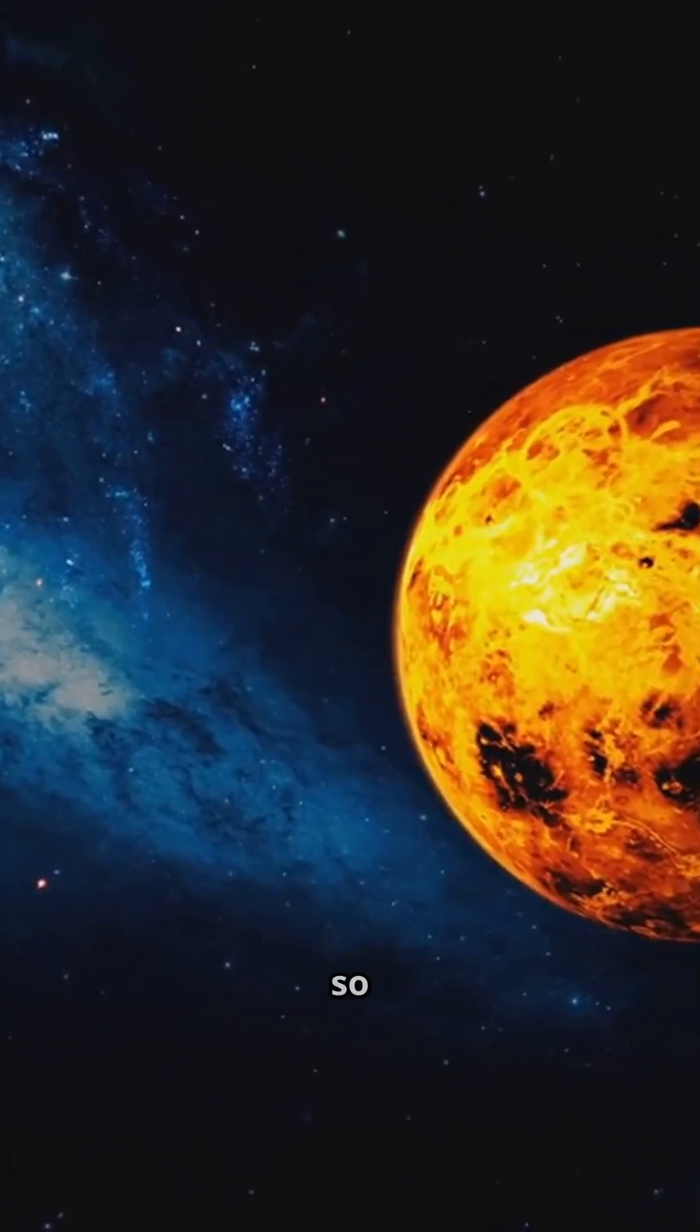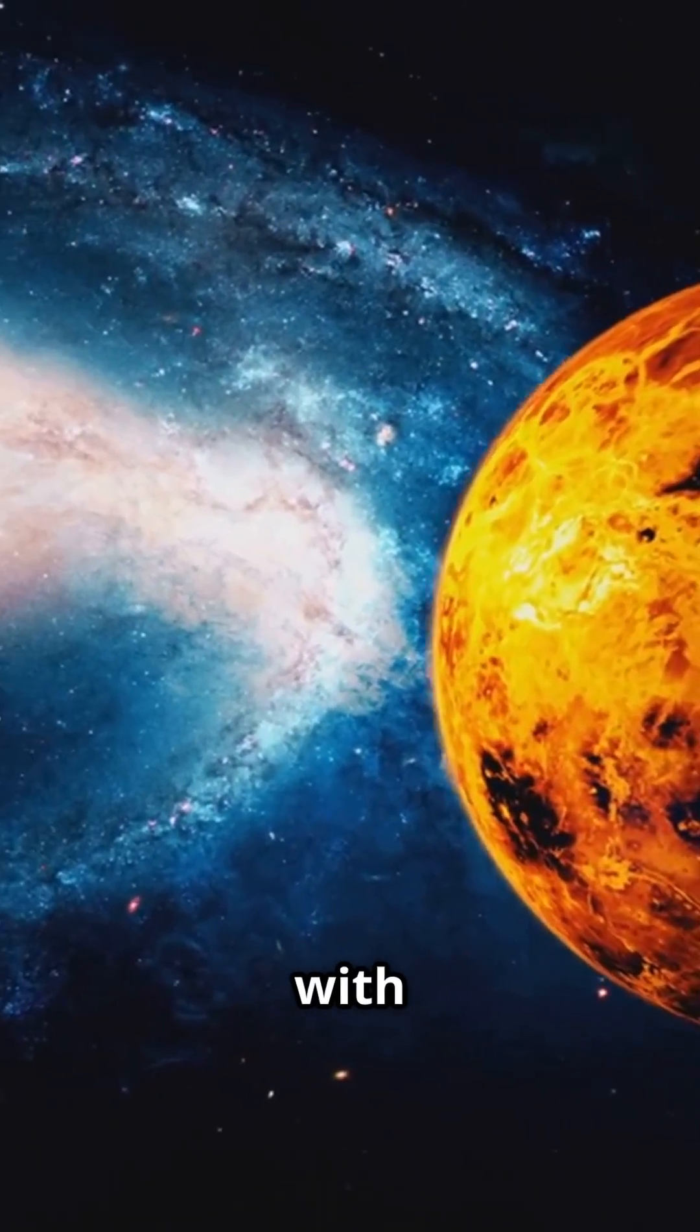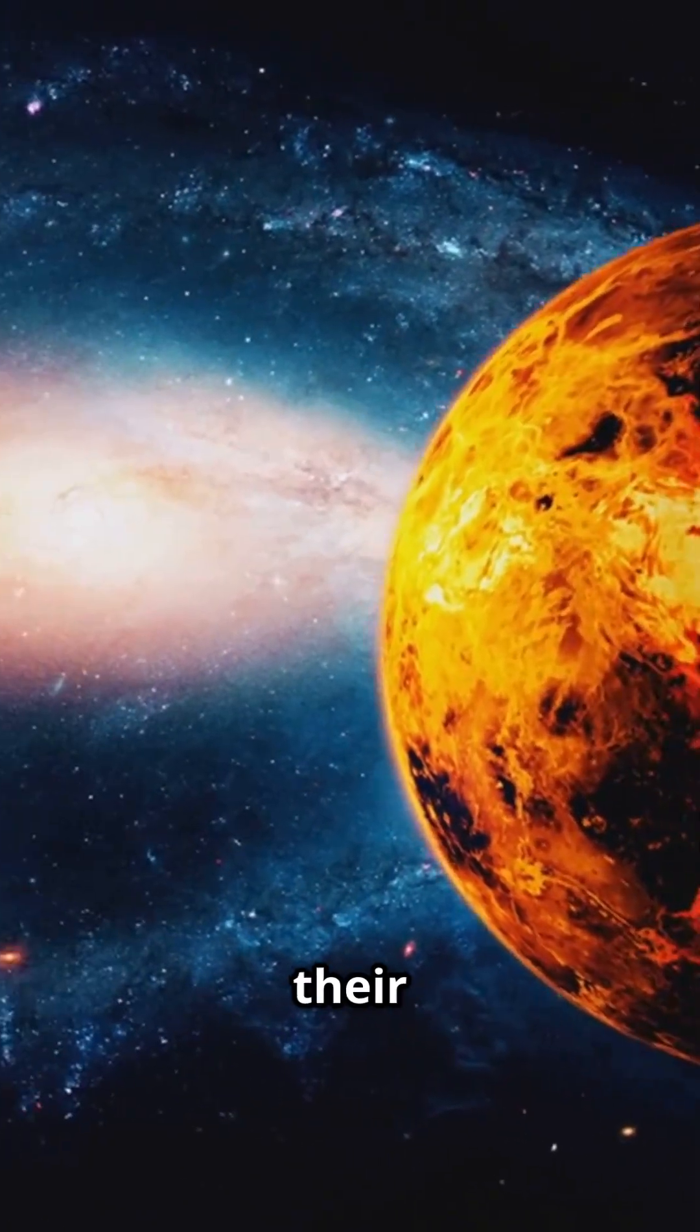Why are Venus and Uranus so unusual? Scientists think that long ago, massive collisions with other space objects knocked them off their original paths.